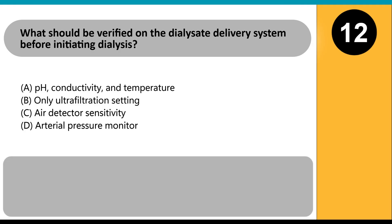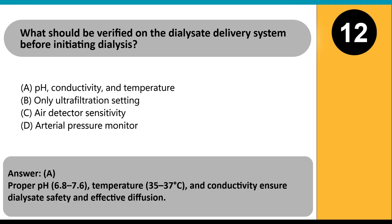What should be verified on the dialysate delivery system before initiating dialysis? A. pH, conductivity, and temperature. B. Only ultrafiltration setting. C. Air detector sensitivity. D. Arterial pressure monitor. Answer A. Proper pH (6.8 to 7.6), temperature (35 to 37 degrees Celsius), and conductivity ensure dialysate safety and effective diffusion.